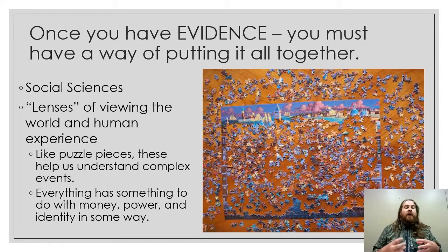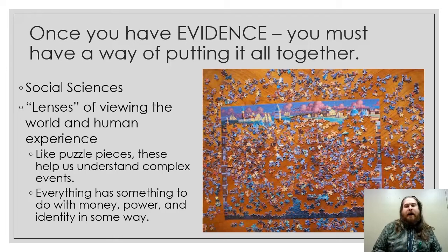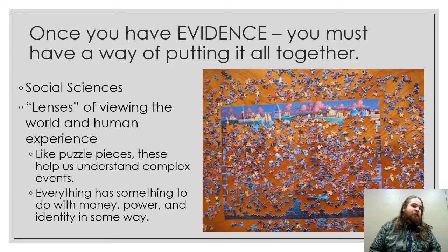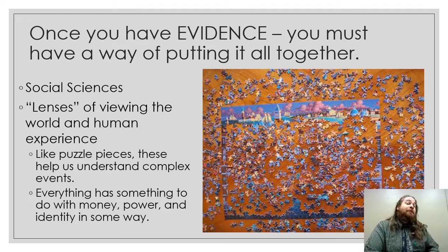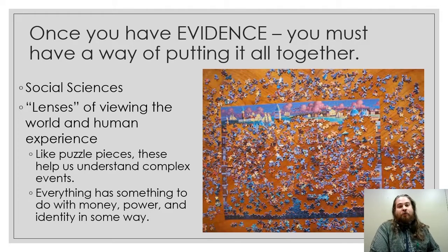Once you have all that evidence, you have to find a way of putting it all together, almost like a puzzle. Various lenses — economics, politics, sociology, culture — they're like puzzle pieces that help us piece together a very important event. Everything has something to do with money. Everything has something to do with power, and everything has something to do with cultural identity in some way, shape, or form. You put the three together, you get a better sense of what the world was looking like at the time you're studying.